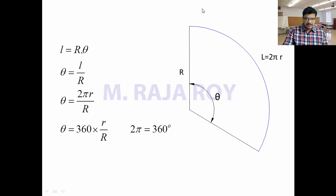When a circle is rolling on this particular directing circle, the length of this arc is equal to the circumference of the rolling circle. Assume that r is the radius of the rolling circle, then the circumference will become 2πr — that is nothing but this arc length L. That means L = 2πr.